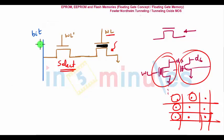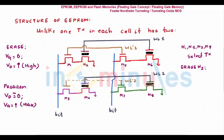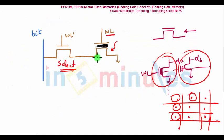Now we'll understand why — in an array of multiple cells — how do you read and write. The drawback of EEPROM was that it cannot erase a specific part of the memory. To erase a specific part electrically, we introduced EEPROM — electrically erasable programmable read-only memory. Now we are trying to see how we can electrically erase only a specific part of the memory.